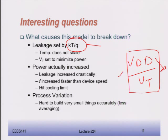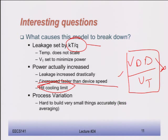We're hitting cooling limits as a result. One response has been: fine, we're not going to go faster anymore. And indeed, microprocessor clock speeds haven't gone up much at all — they've been hovering around 3.3 to 4 GHz and that's where we're stuck.